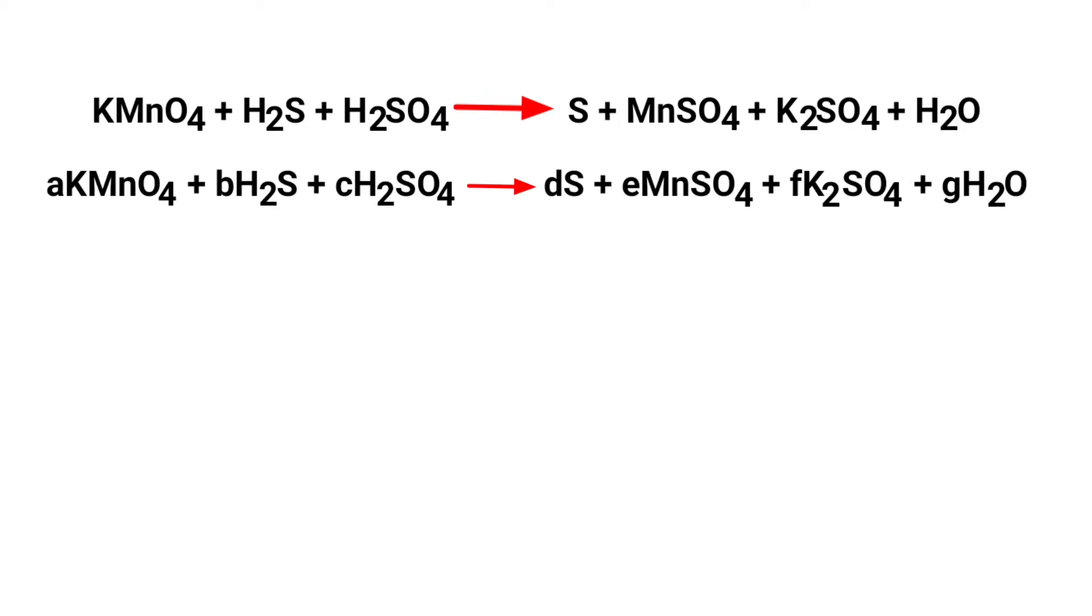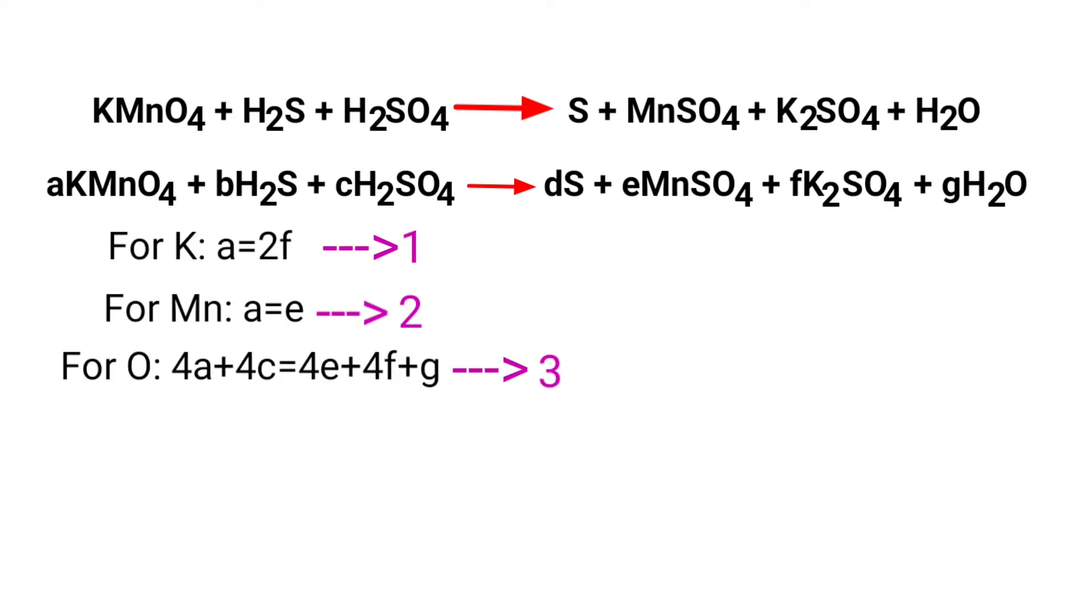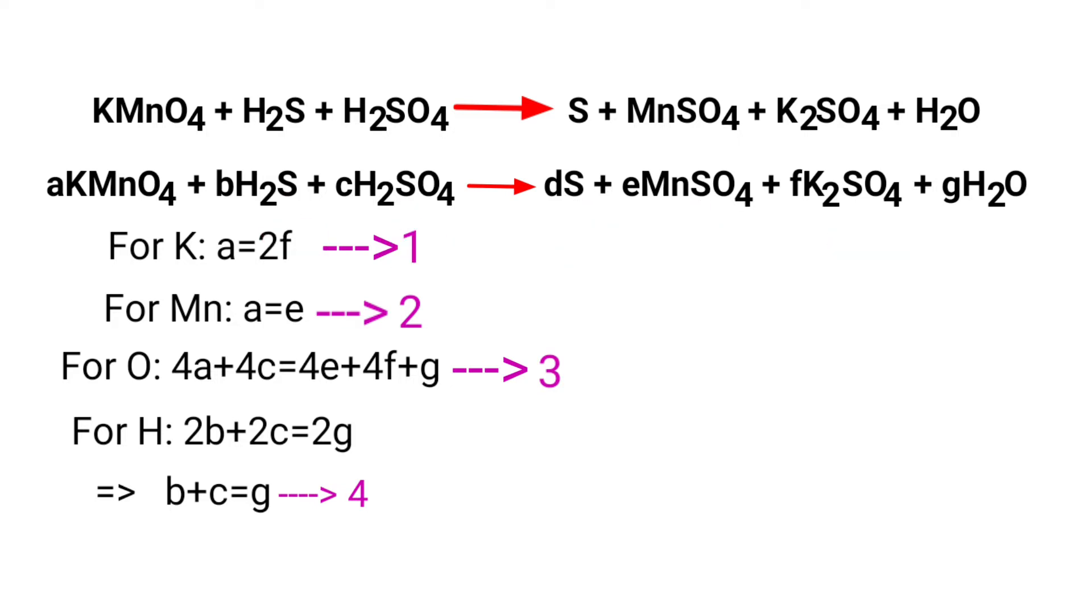For potassium, a equals 2f. For manganese, a equals e. For oxygen, 4a plus 4c equals 4e plus 4f plus g. For hydrogen, 2b plus 2c equals 2g, so b plus c equals g. For sulfur, b plus c equals d plus e plus f.